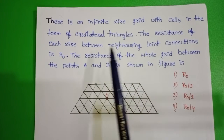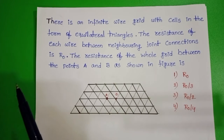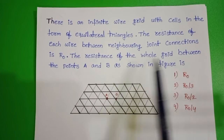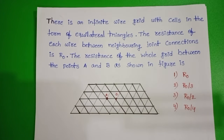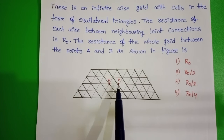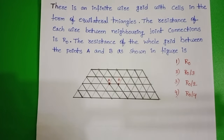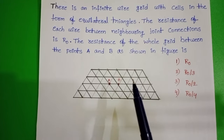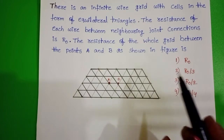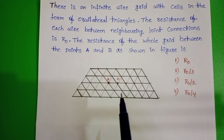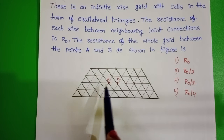There is an infinite wire grid with cells in the form of equilateral triangles. The resistance of each wire between neighboring joint connections is R0. We have to find the resistance of the whole grid between points A and B as shown in the figure. Observing the figure, it is an infinite wire grid with cells in the form of equilateral triangles, and the resistance between any two joint connections is R0.